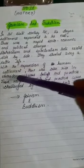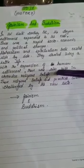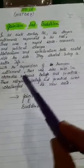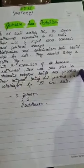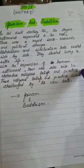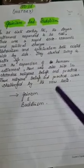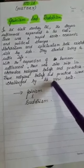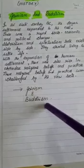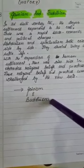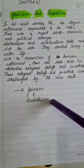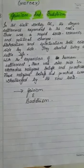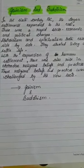With the expansion of human settlement, there was also a rise in orthodox religious beliefs and practices. These beliefs and practices were not accepted by everyone and were challenged by new sects. These new sects were Jainism and Buddhism. Also, in the 6th century BC, there was the emergence of thinkers like Gautam Buddha and Vardaman Mahavira.